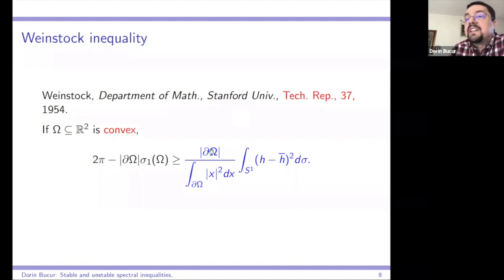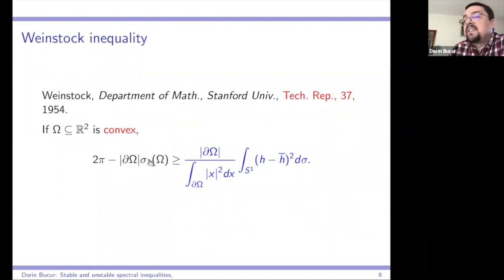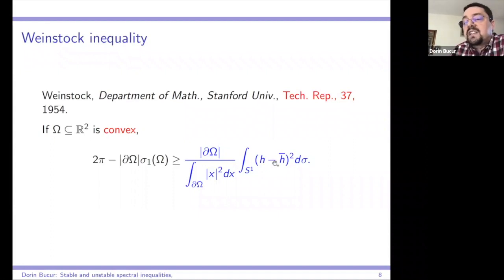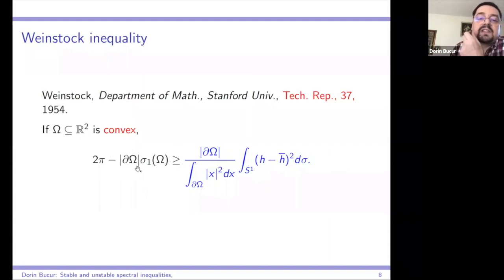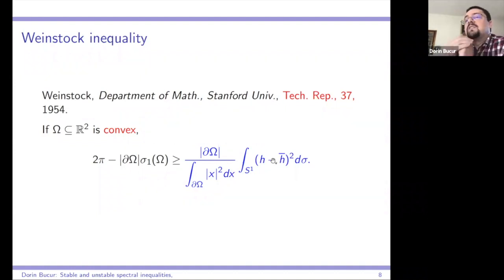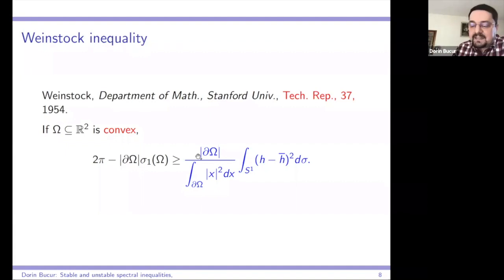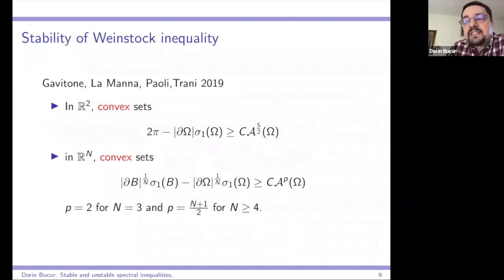In the preprint, Weinstock proved an inequality for convex sets: 2π minus the product of the perimeter and the Steklov eigenvalue is larger than a quantity involving the perimeter, the boundary momentum, and the difference between the support function and its average integrated over the circle. This is already a quantitative inequality because if the perimeter times sigma_1 is close to 2π, the support function must be close to its average — a stability result, but only for convex sets.